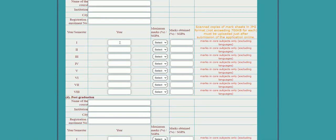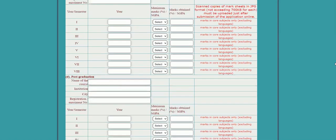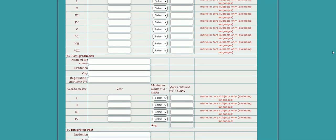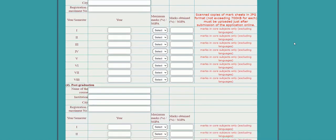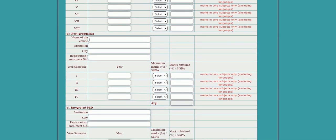Under graduation details, select up to which semester you have received results — from first semester up to eighth semester — and upload the corresponding mark sheet. For post-graduation, note that BSc has six semesters and BTech has eight semesters. Fill in accordingly, upload the mark sheet, then fill in the postgraduate course name, institution, city, and registration or enrollment number.